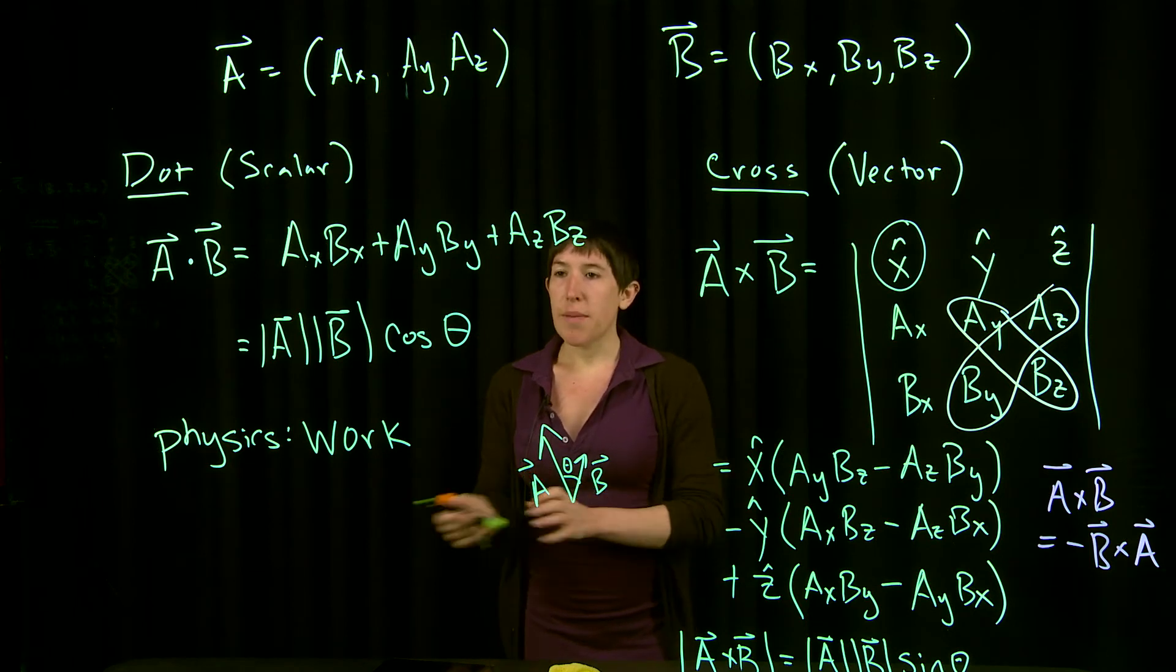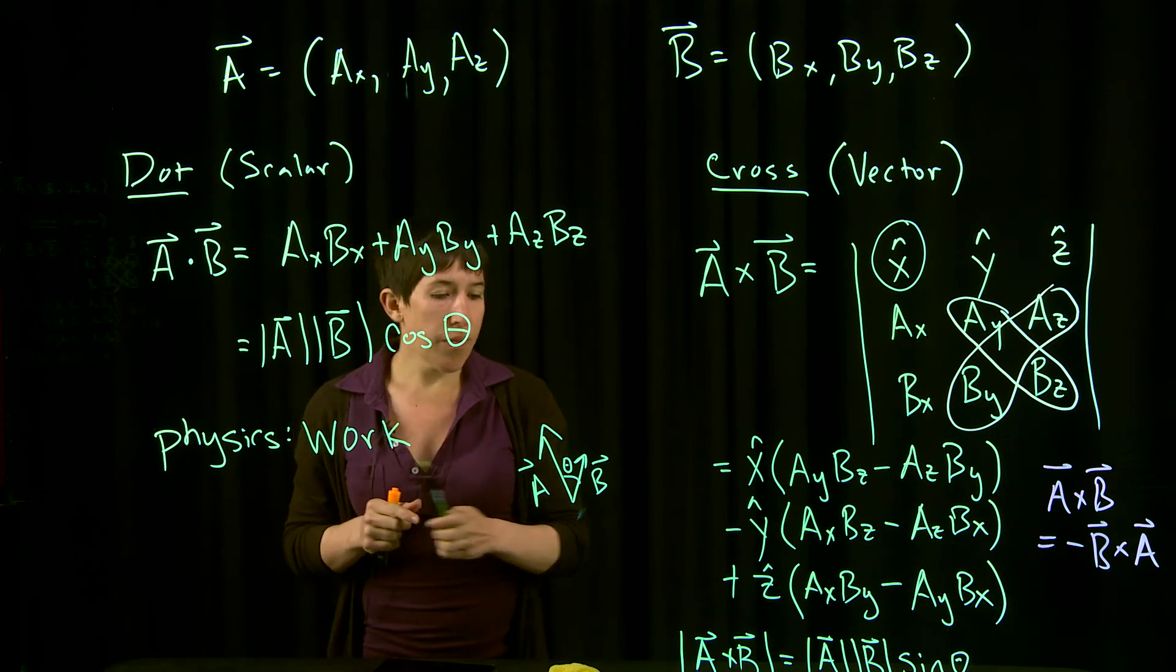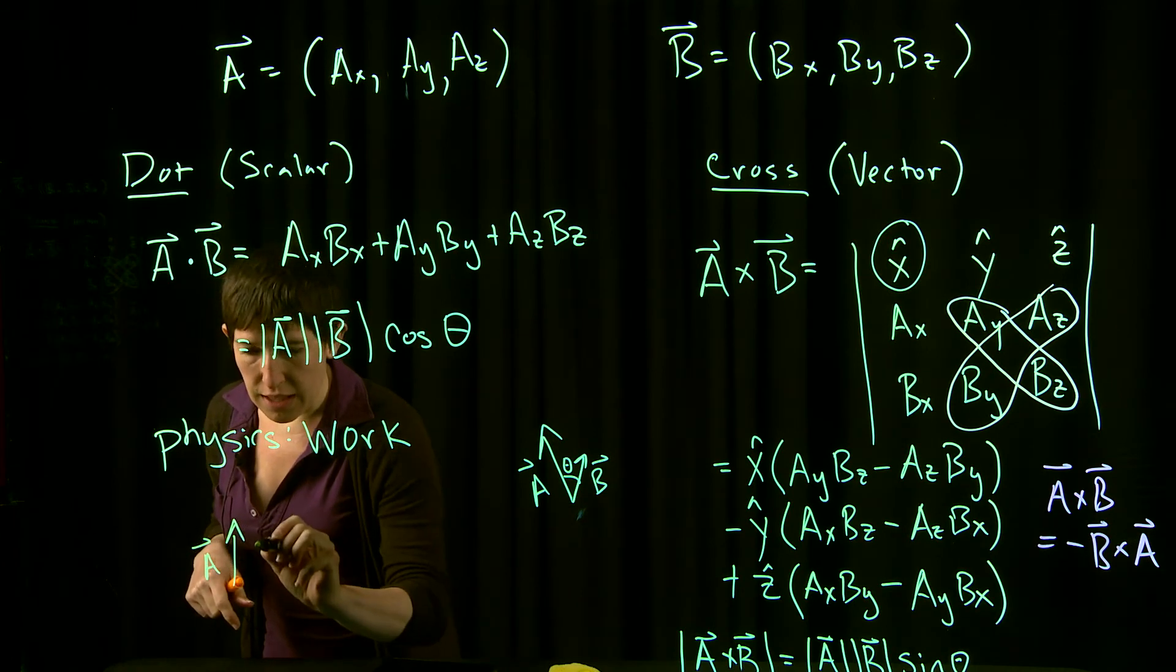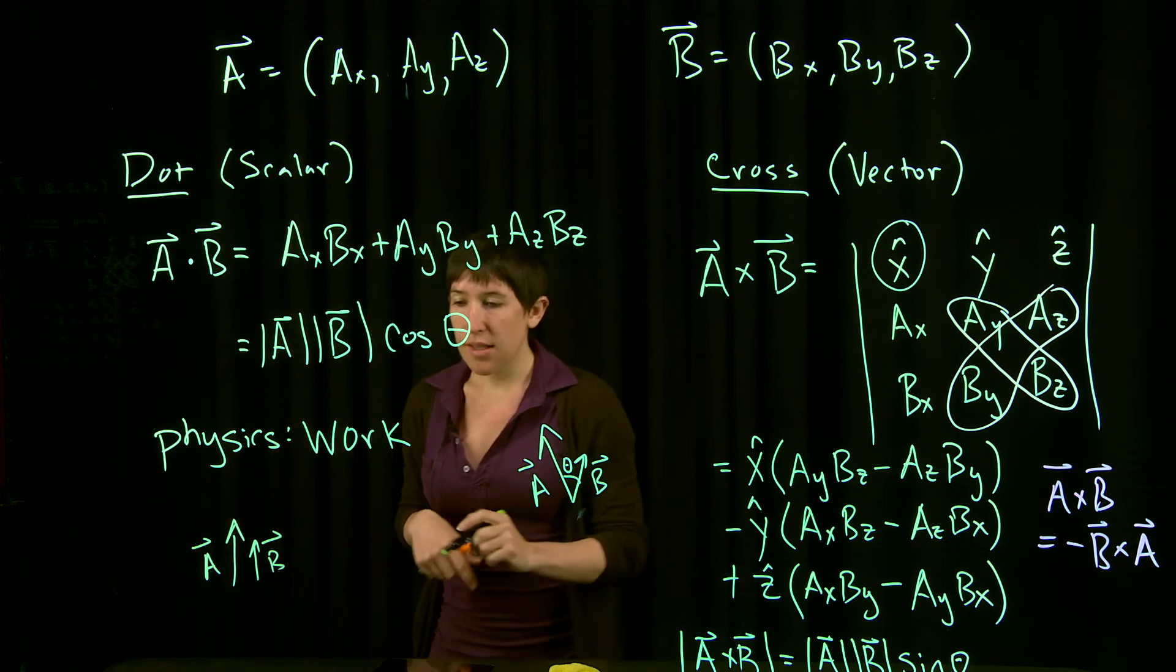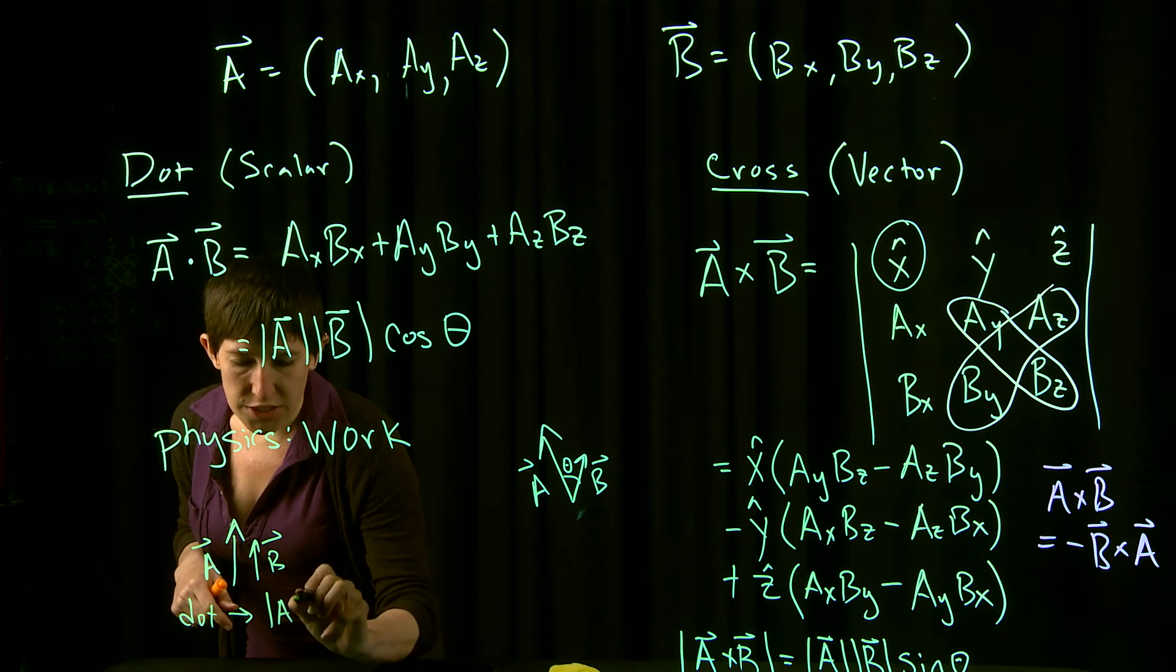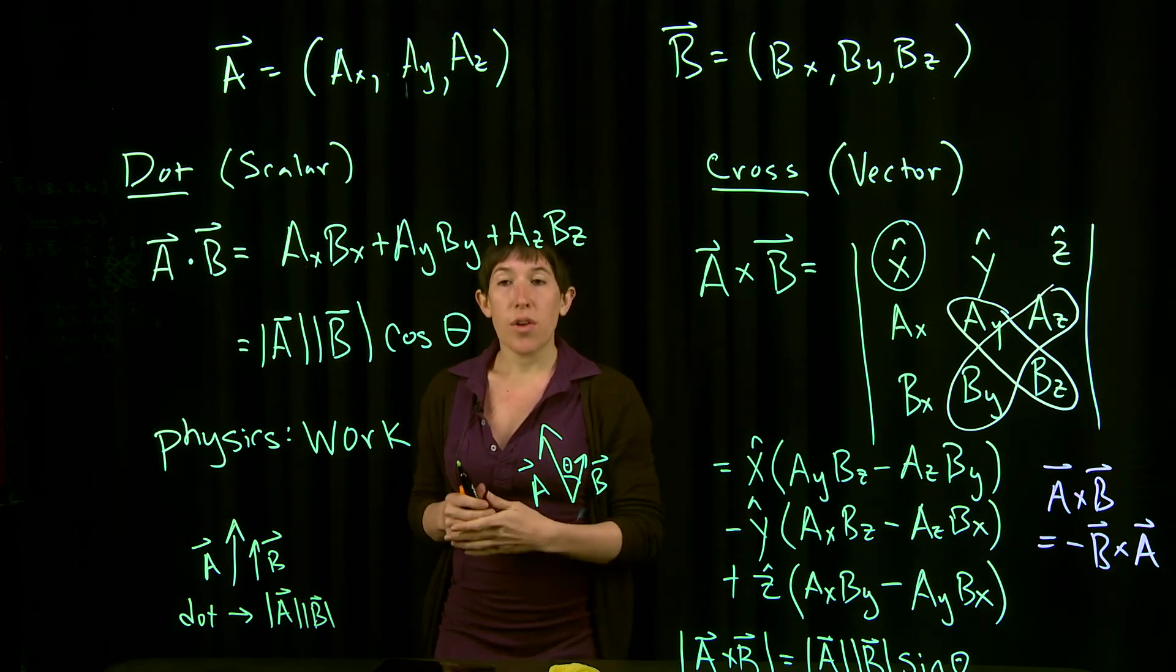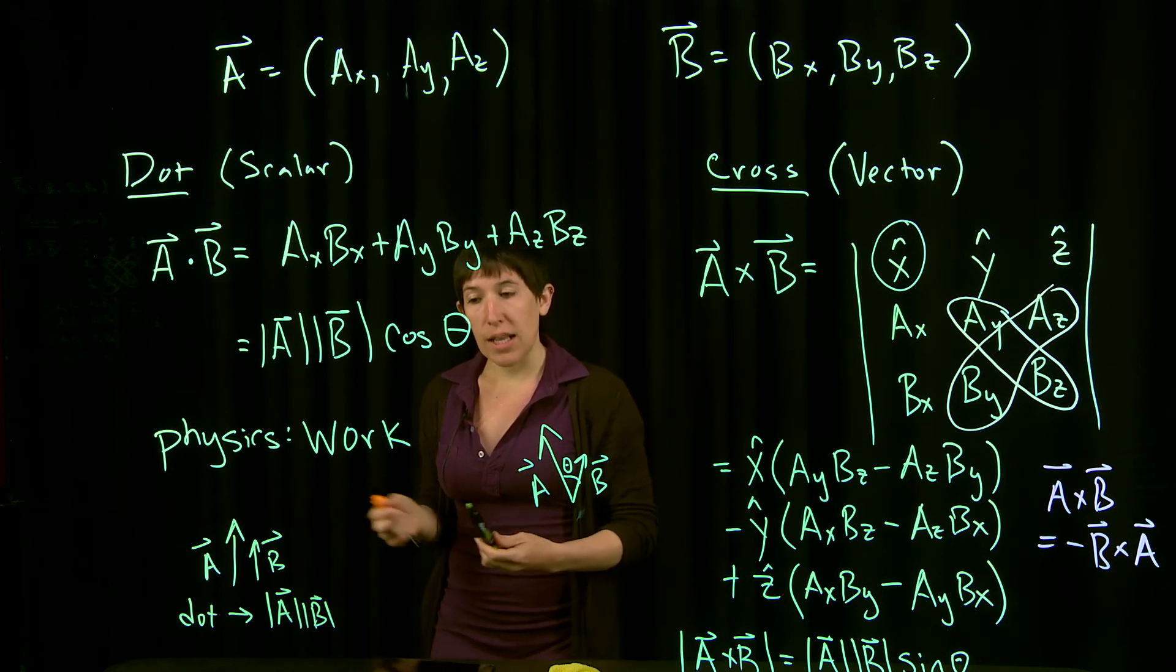Because the dot product depends on cosine and the cross product depends on sine, if A and B are parallel, then for the dot product we get just |A| times |B|. This is because for θ=0, cos(θ) equals one. So the dot product is maximized when two vectors are parallel.